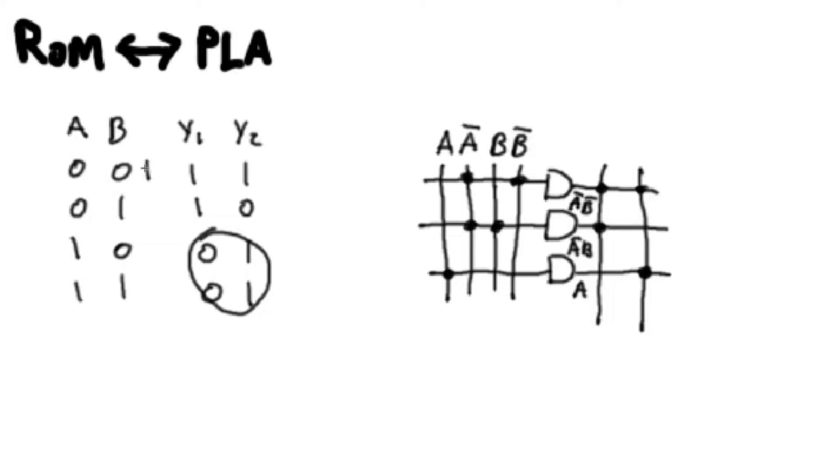Normally what we would have is we would have an AND gate there, an AND gate there, an AND gate there, and an AND gate there, each one representing its particular combination of inputs. But we can actually, since these two AND gates are representing the same output, we can tie them together. And since the only thing that matters is A, it doesn't matter what the state of B is, we can just ignore those.